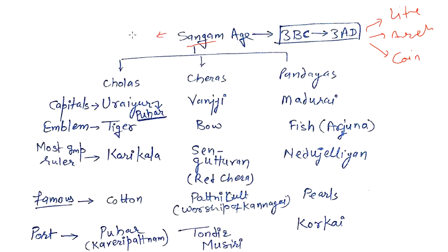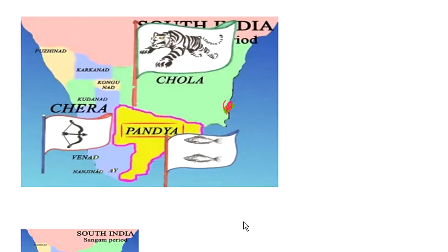Sangam means an assembly of poets. This assembly of poets happened under the patronage of the Pandya kings, and that is why this period is called the Sangam Age. Based on literary and archaeological sources, in the Sangam Age there were three kingdoms: first is Chola, second is Chera, and third is Pandya. On the map, Chola is in the eastern part, Pandya in the south, and Chera in the western part.